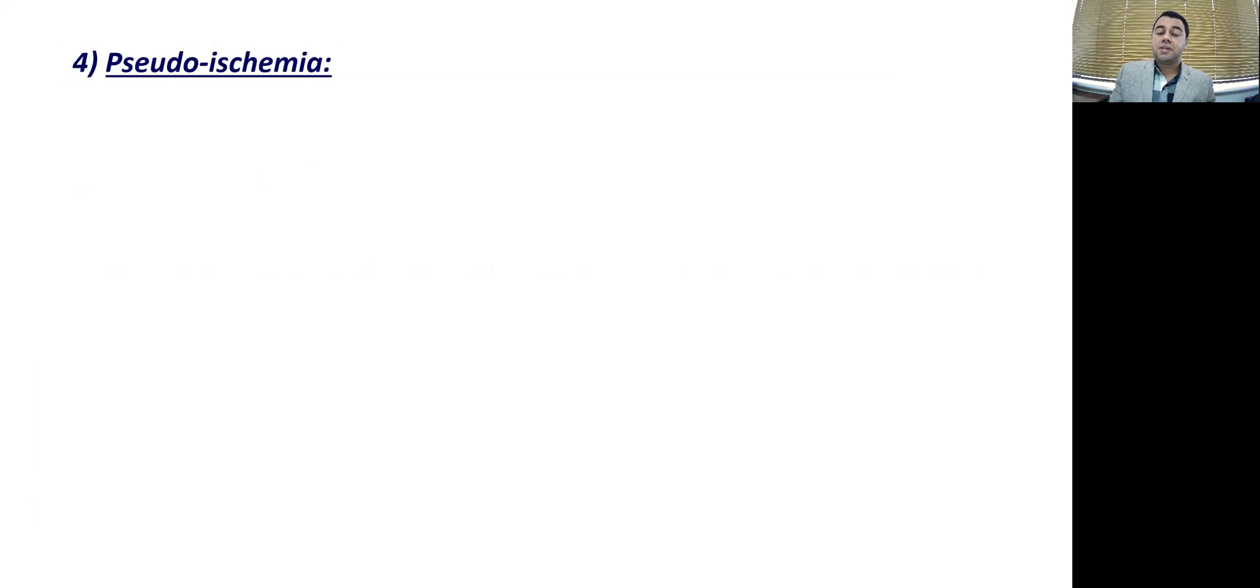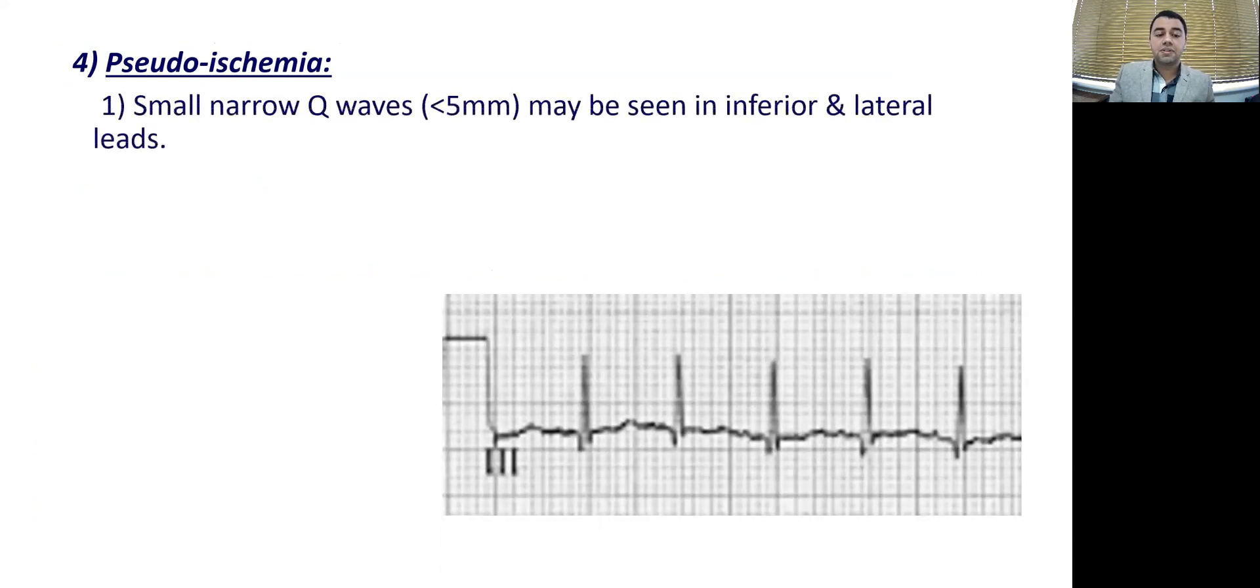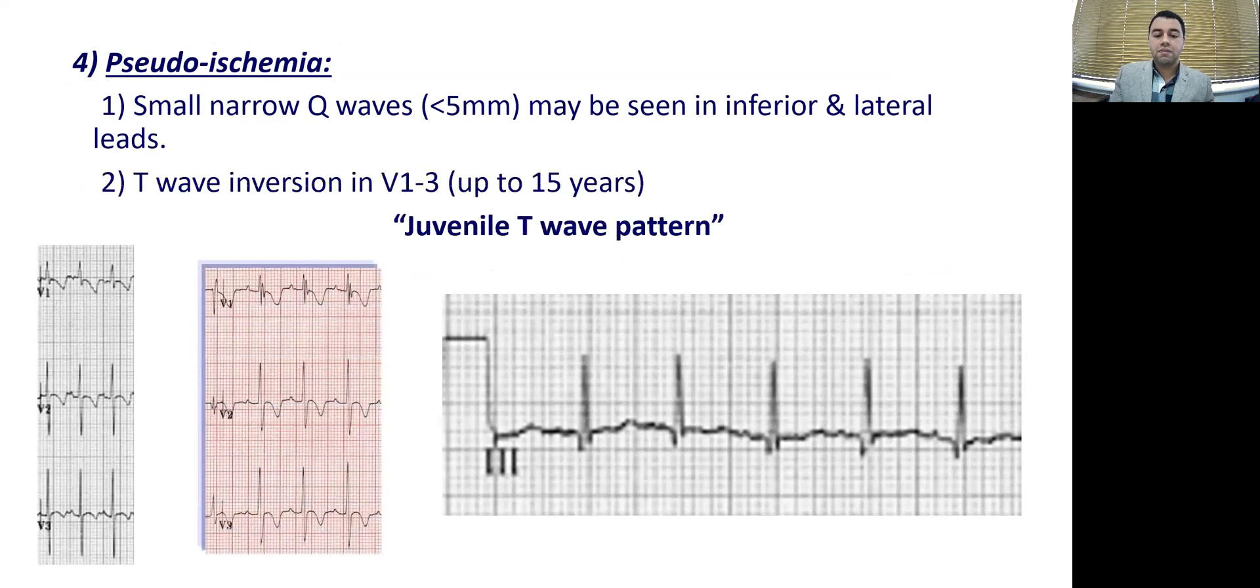Fourth one is the pseudo ischemia. If we check for the pediatric ECGs, we will notice that they normally have a small Q wave that might be seen in the inferior leads and lateral leads. But they should be small. They shouldn't be a big Q wave. They should be less than five millimeters. There is also the T wave inversion that we normally see in pediatric ECGs from V1 to V3. They can stay up to the age of 15 and they're called juvenile T wave pattern.